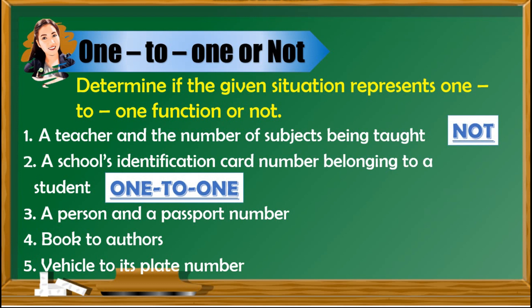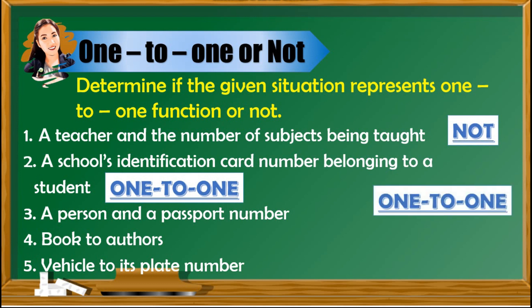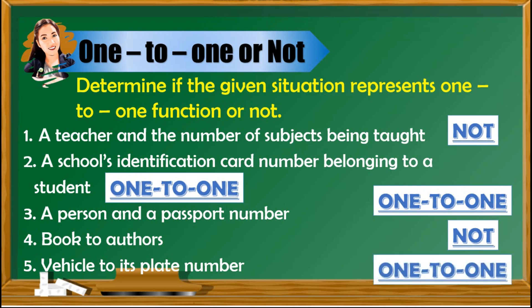A school's identification card number belonging to a student is an example of one-to-one, since an identification card number is unique to every student. Third, a person and a passport number — this is also one-to-one, as no two persons can have the same passport number. Number four, book to authors — this is not one-to-one because a book can have multiple authors. Fifth, vehicle to its plate number is one-to-one because each vehicle has a unique plate number.